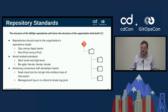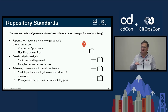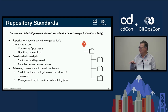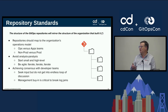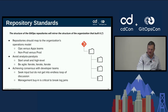Achieving consensus with development teams is a challenge. If you're a platform team trying to put in GitOps standards, you might have 10, 20, or 30 different development teams that don't agree on what those standards should be. Seek input from those developer teams — they'll have good ideas that will impact and improve those standards — but do not get into an endless loop of discussion. At some point a decision has to be made and everybody has to move forward, and that's really where management buy-in is critical to break those log jams.